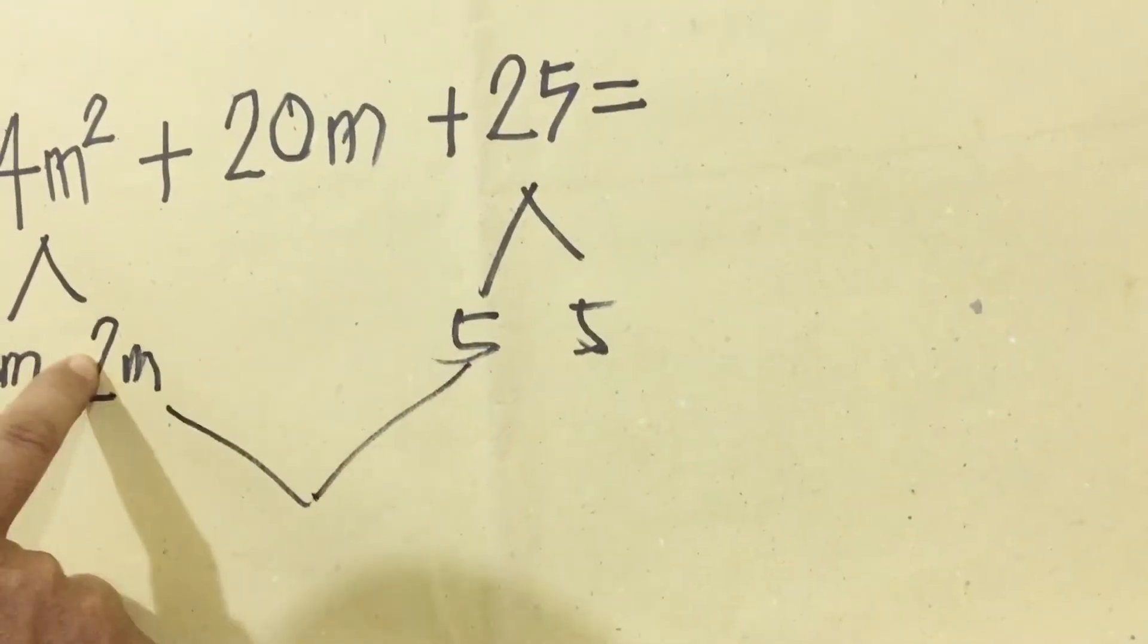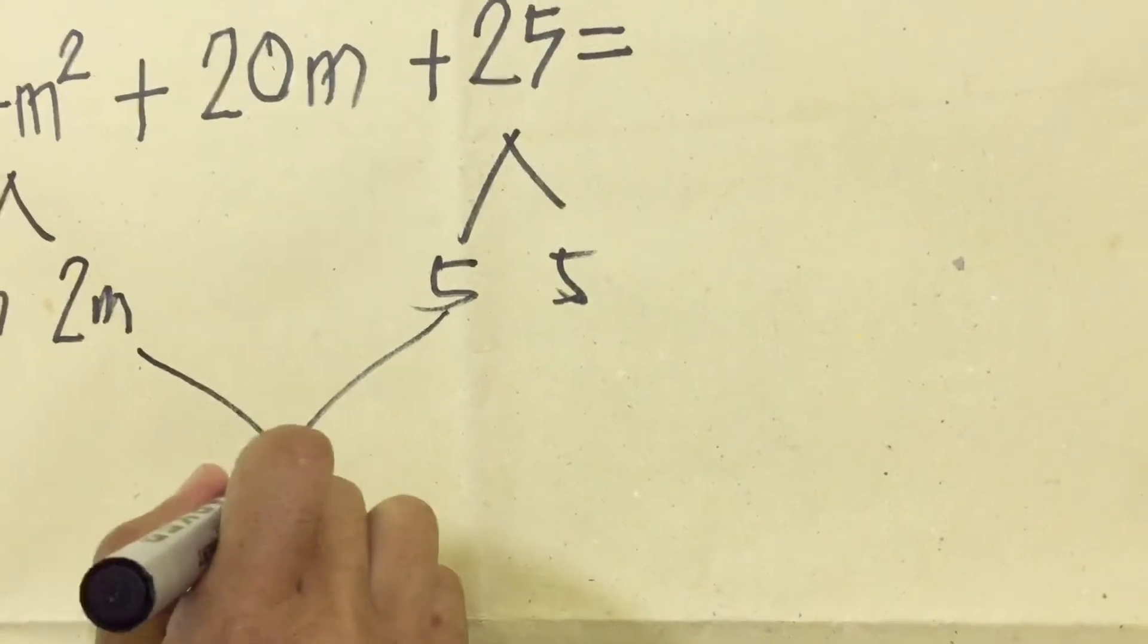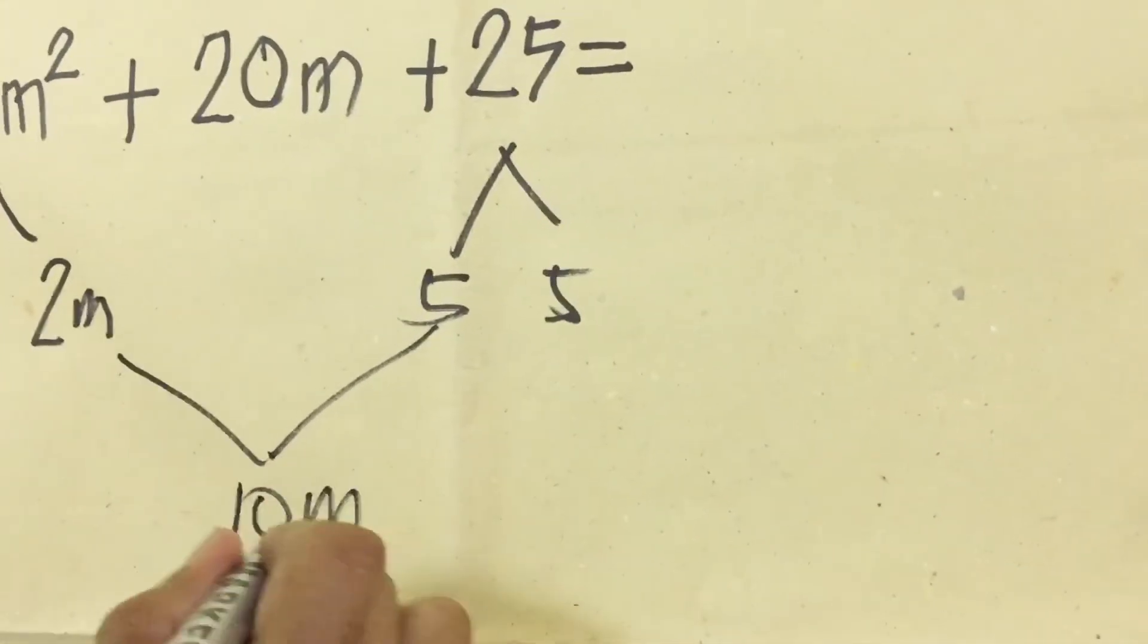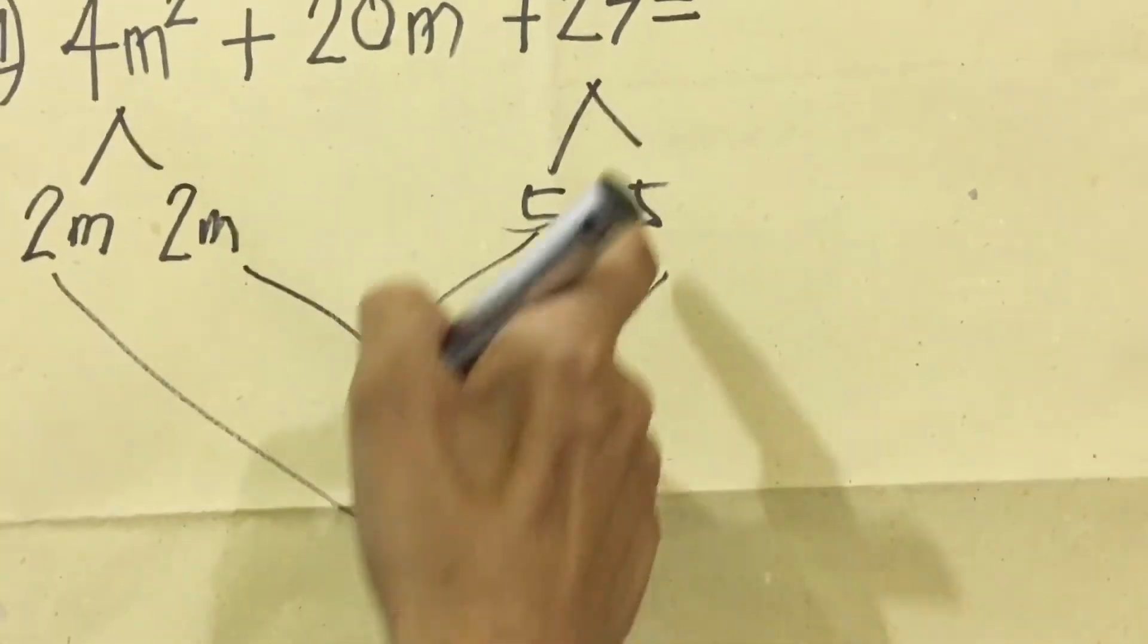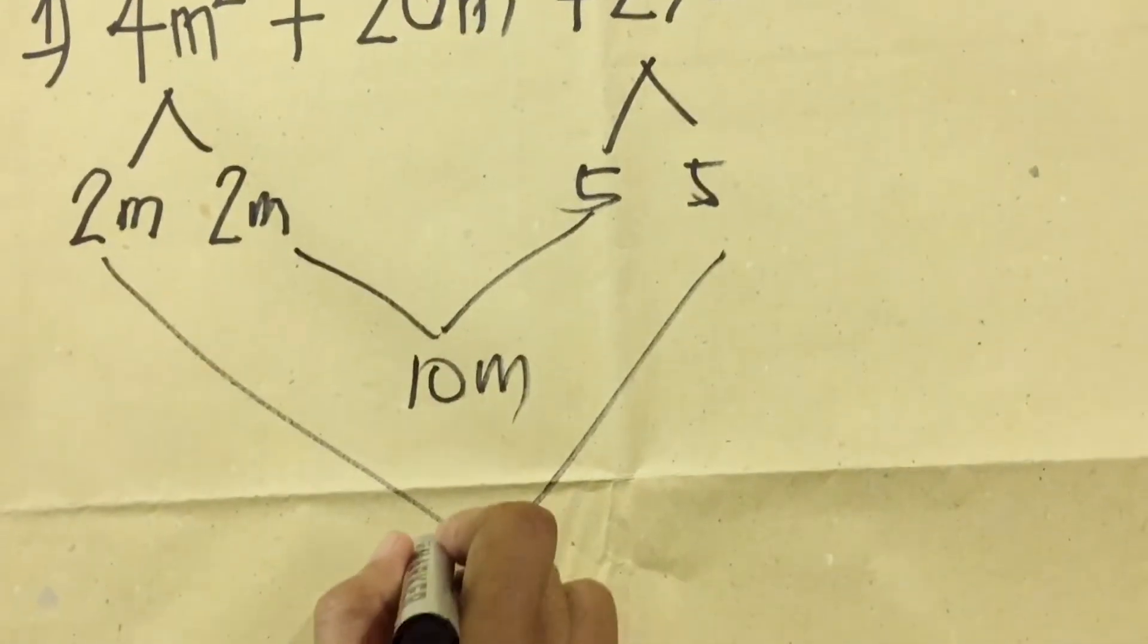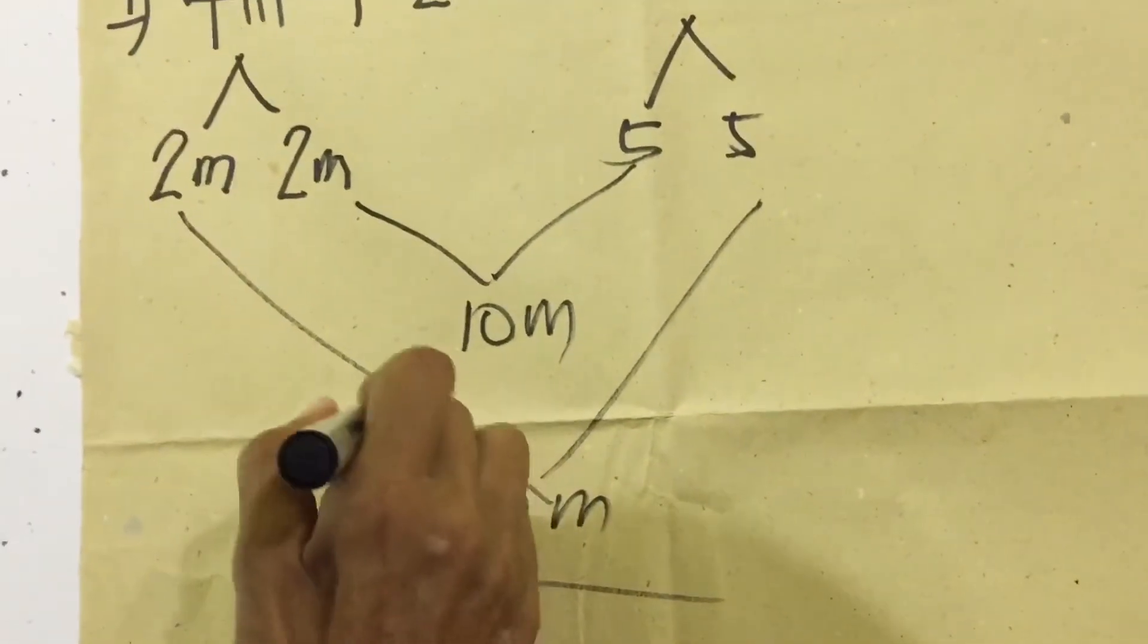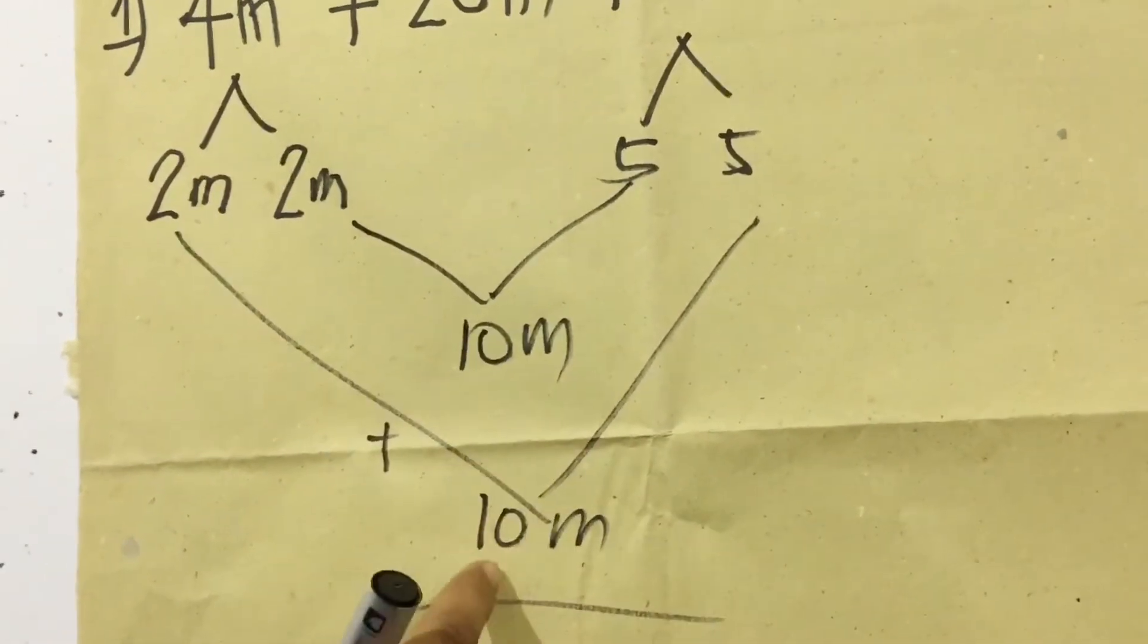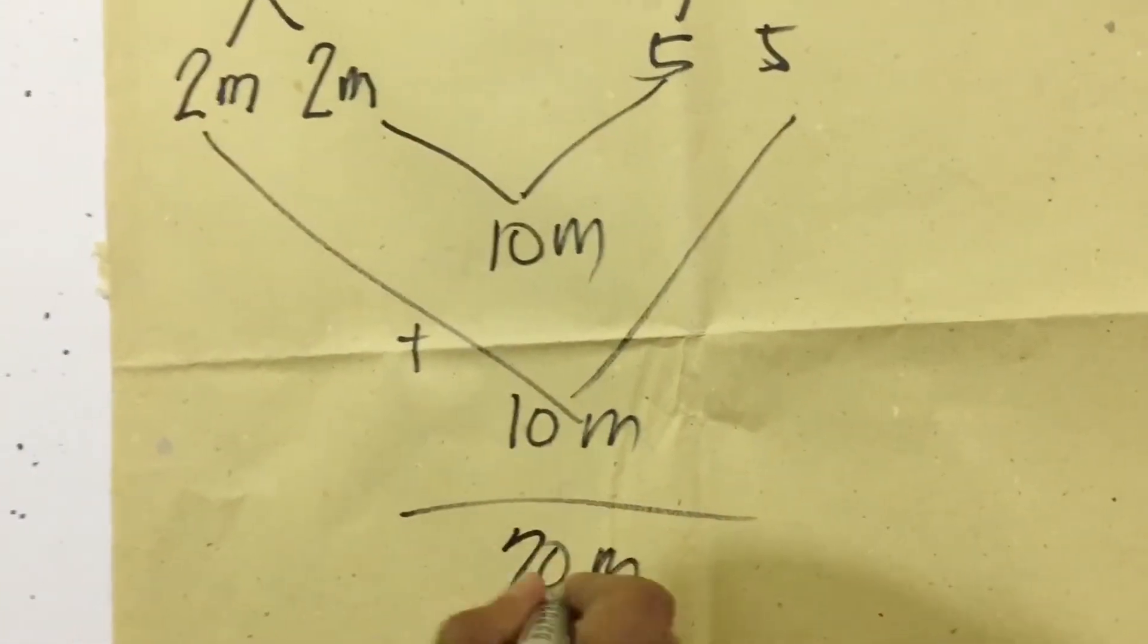2m times 5 equals 10m, and also 5 times 2m equals 10m. Then we're going to add: 10m plus 10m equals 20m, which is now correct to the middle term.